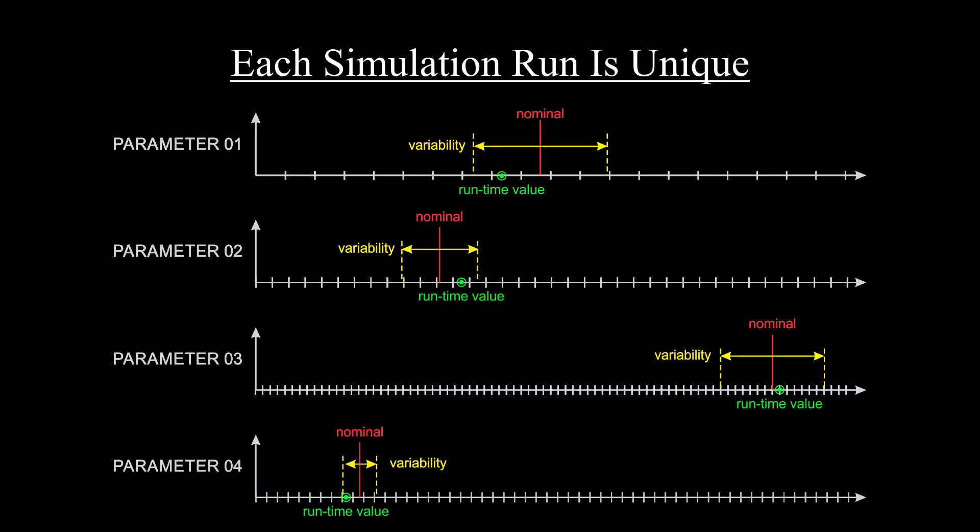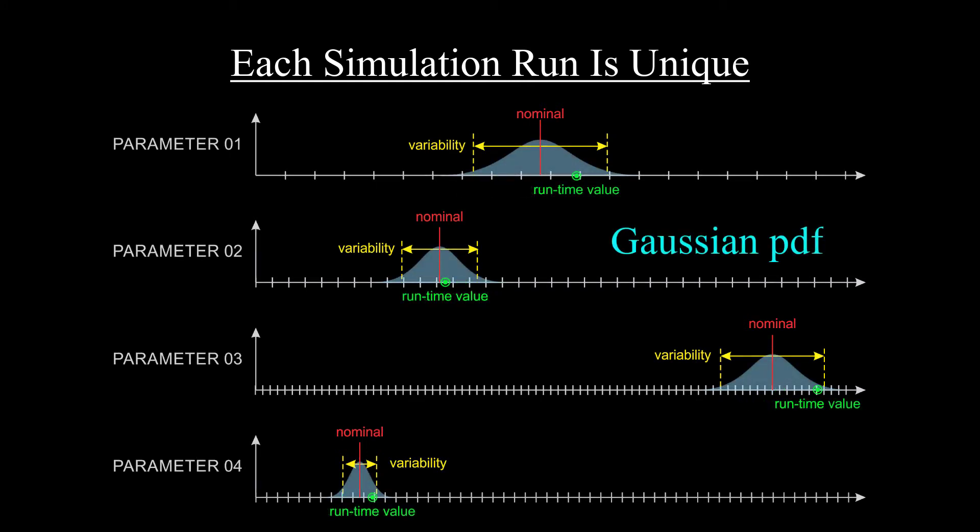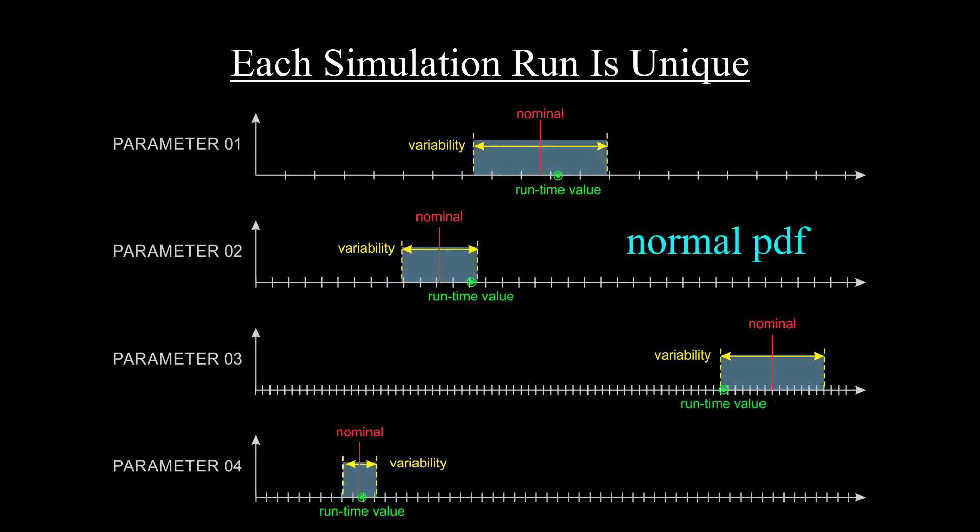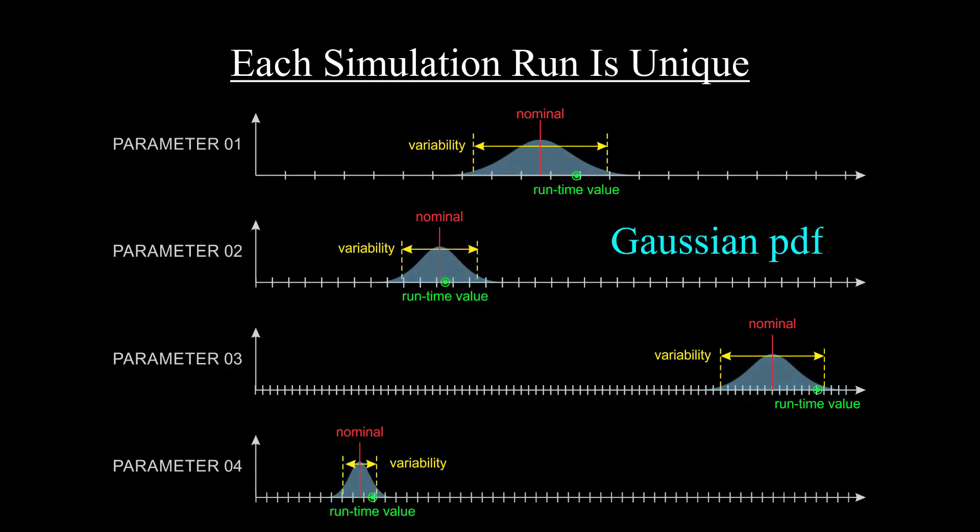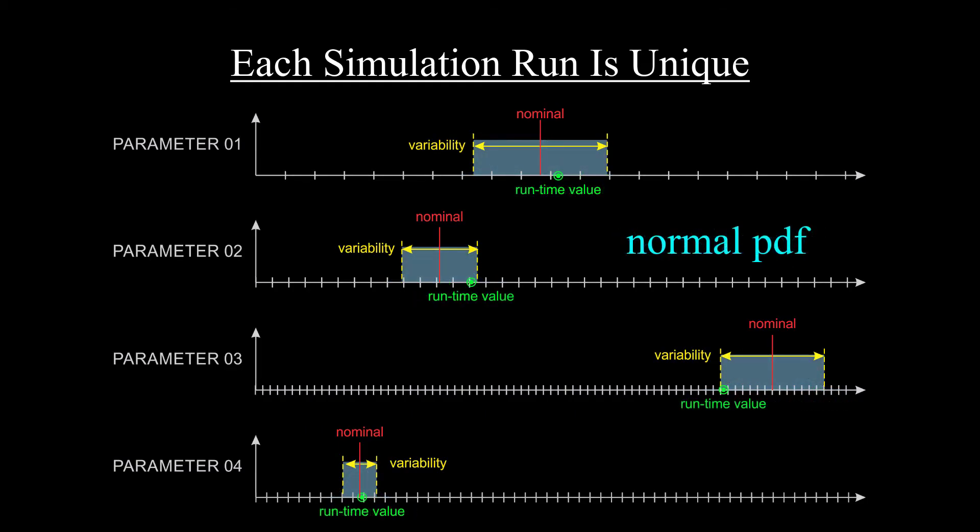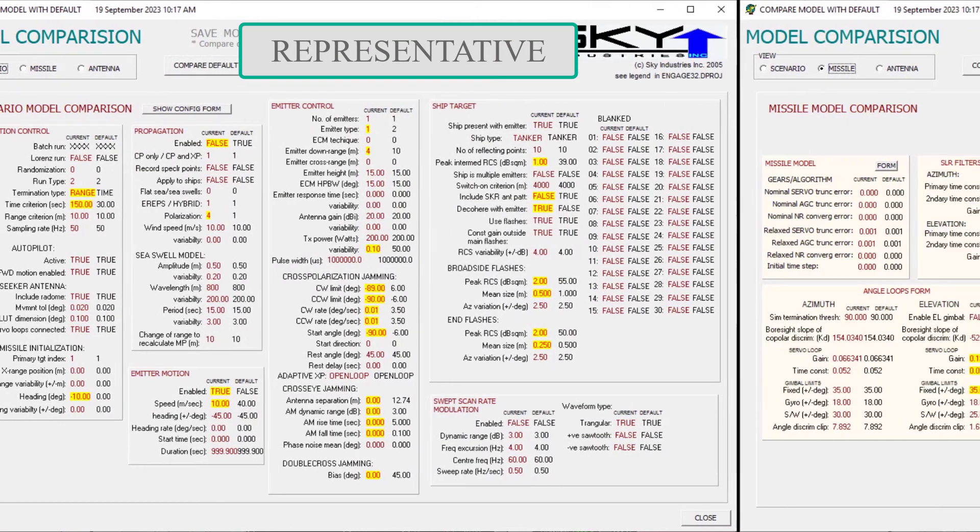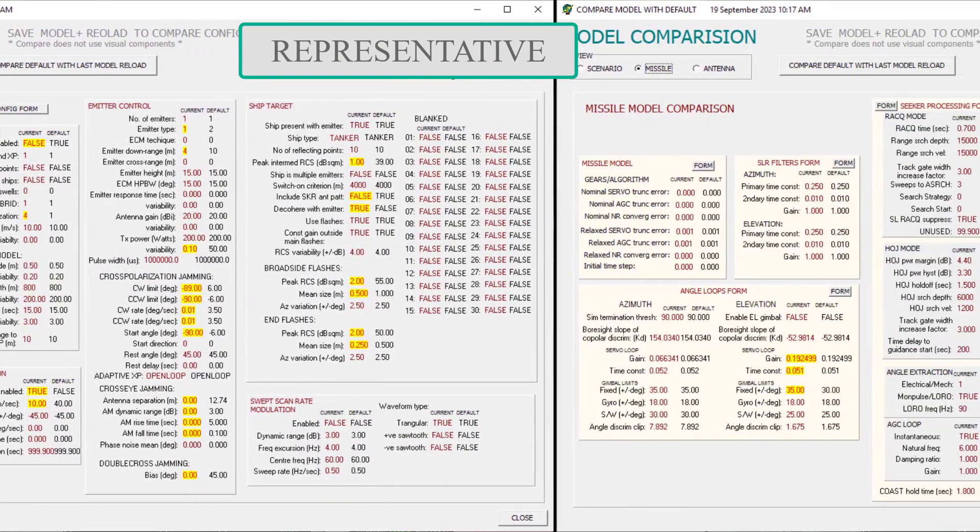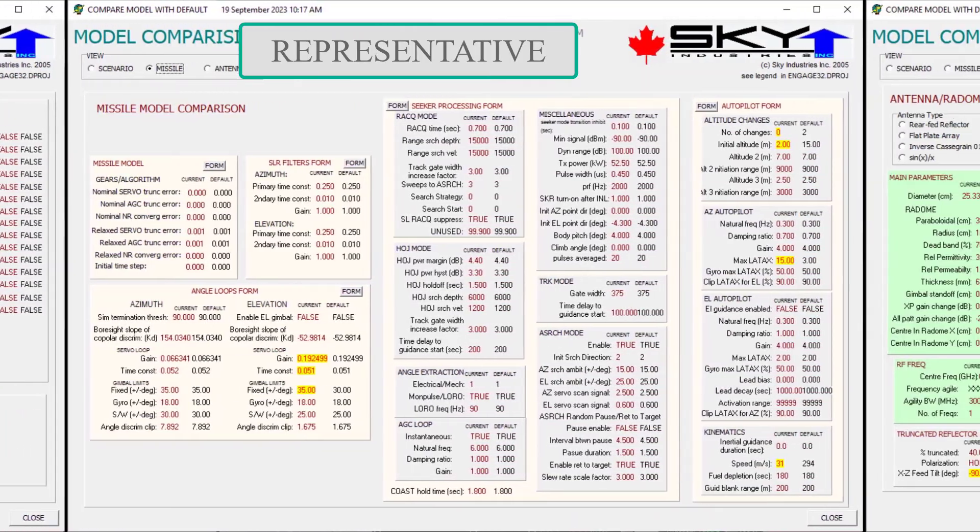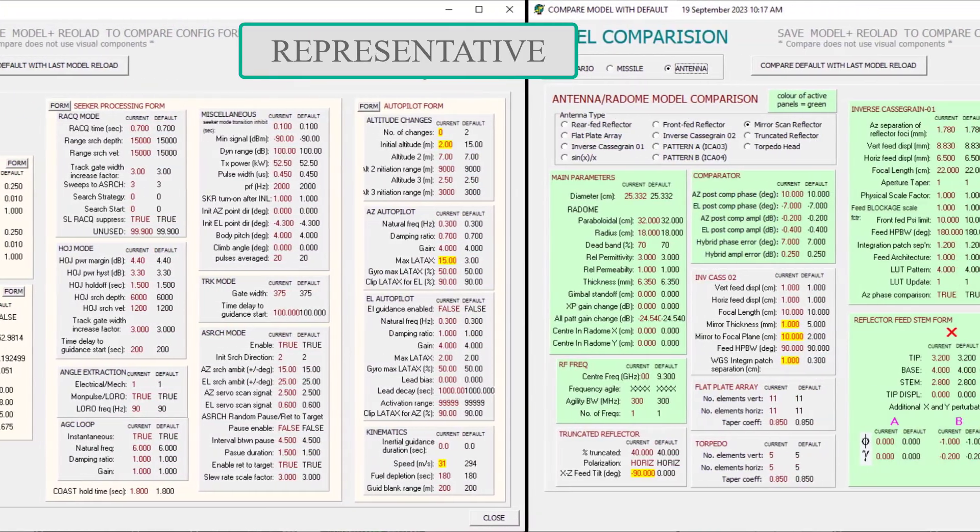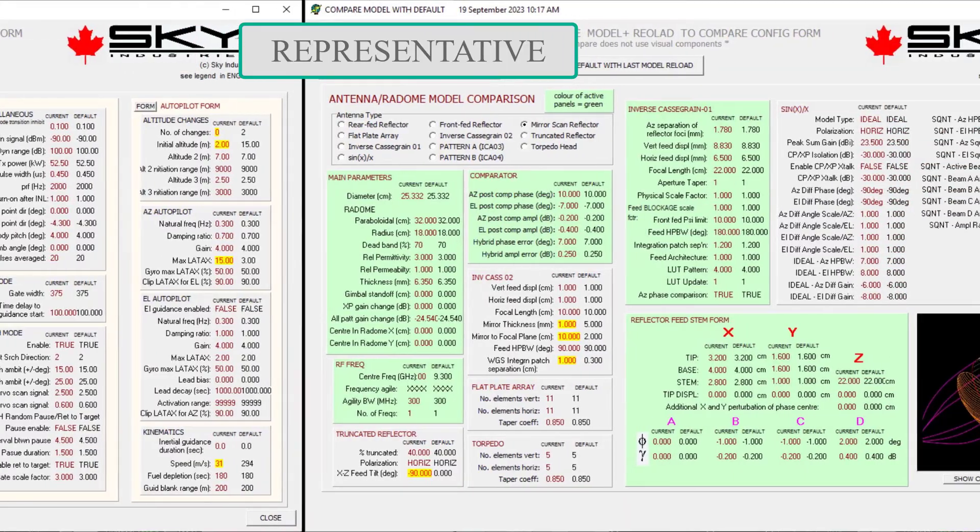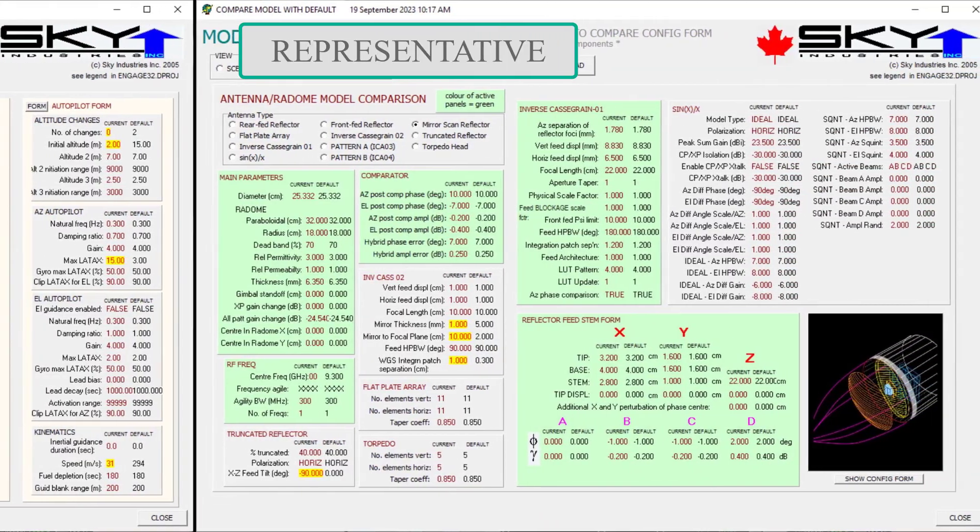We use a random number generator. Use either a Gaussian or a normal probability density function, depending on which one you think best represents the distribution of the particular parameter. And just to hit it one more time, I'm talking about randomizing every single parameter in the simulation that isn't known with absolute moral certainty. So that's every parameter. There is nothing we know with absolute certainty, not even the characteristics of our own equipment.